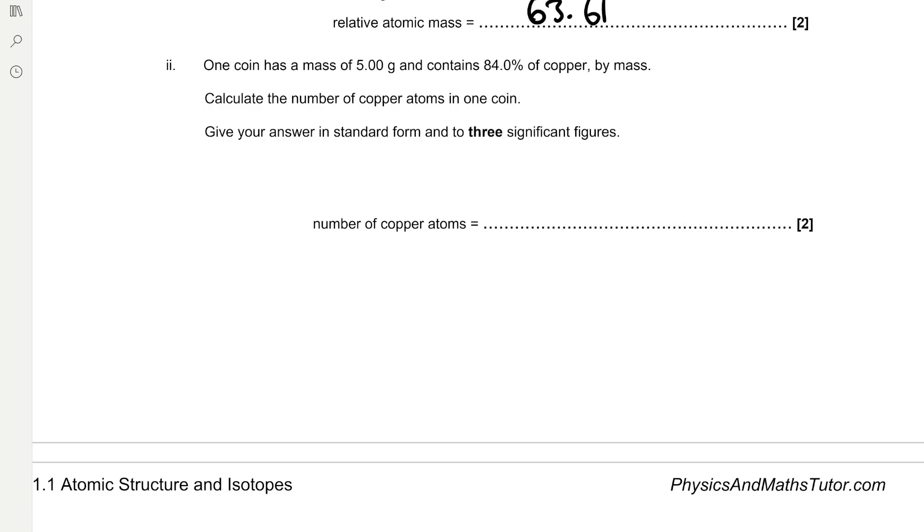One coin has a mass of 5 grams and contains 84% of copper by mass. Calculate the number of copper atoms in one coin. Give your answer in standard form and to three significant figures. So to find the mass of copper in one coin we need to multiply 5 grams by 84%, which gives us 4.2 grams.